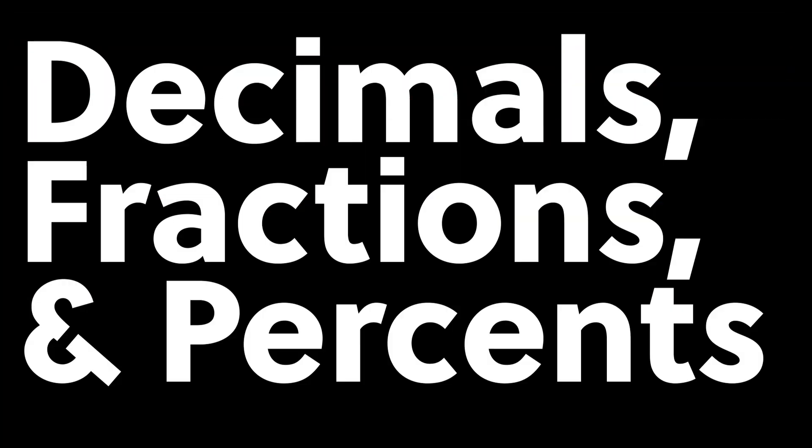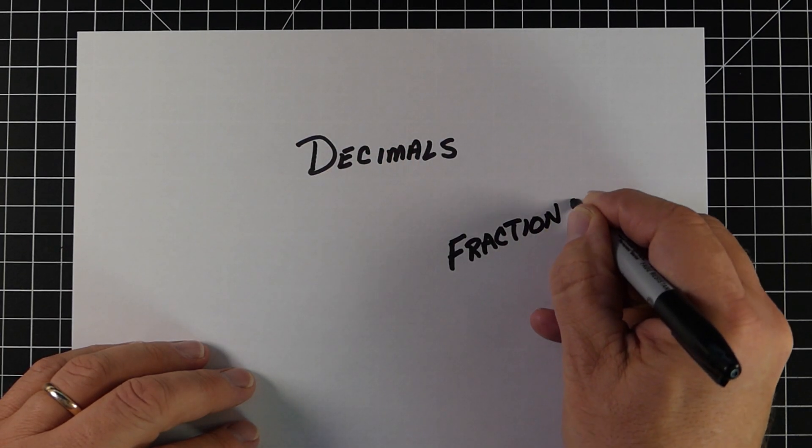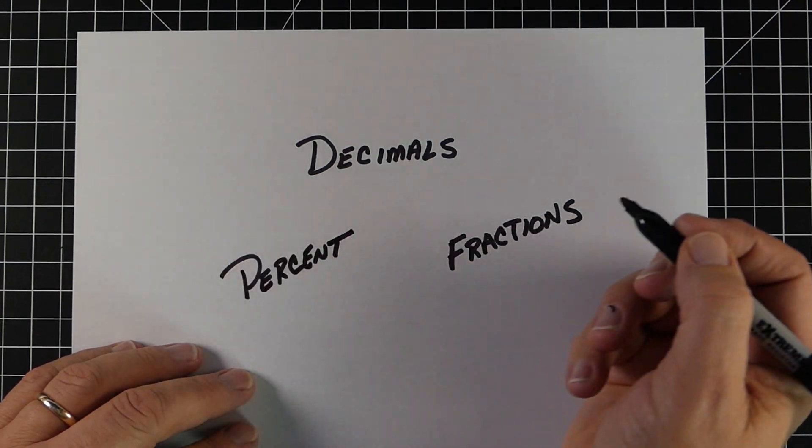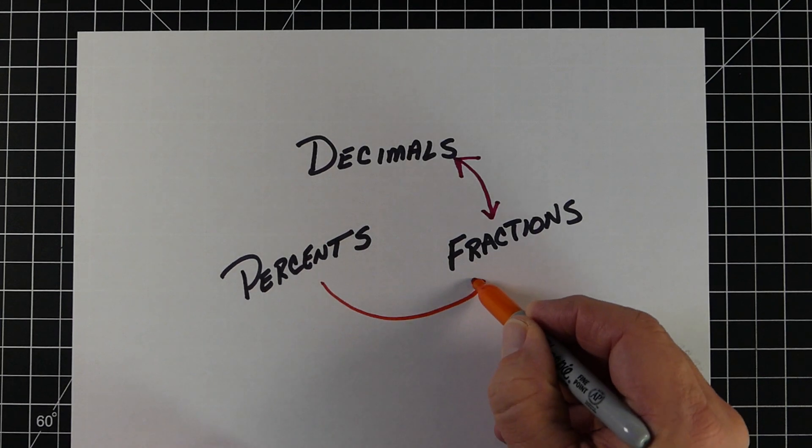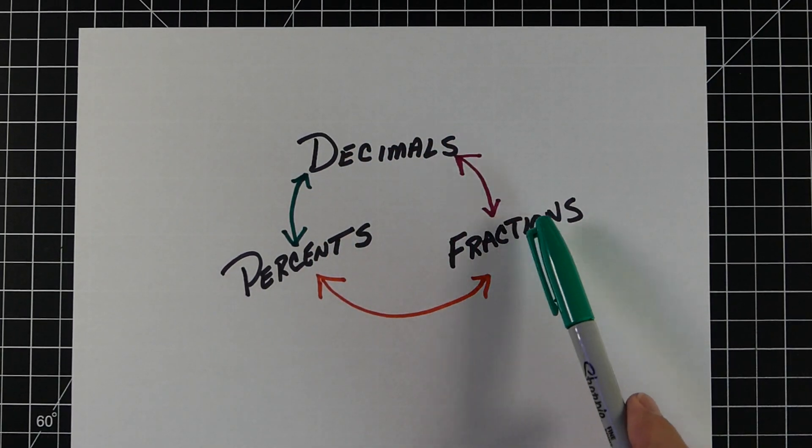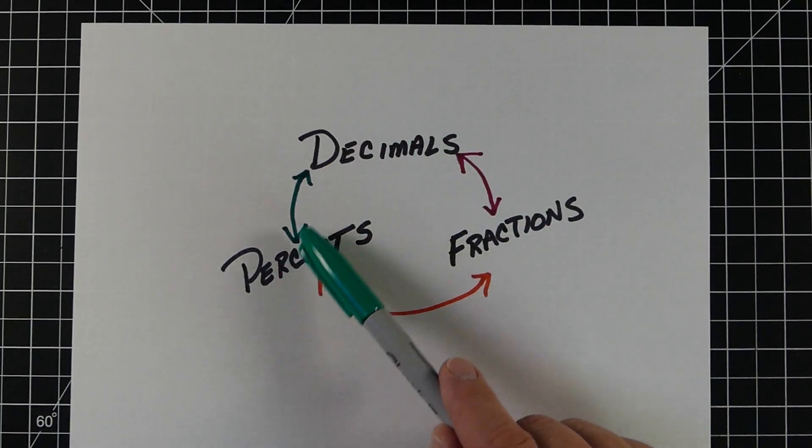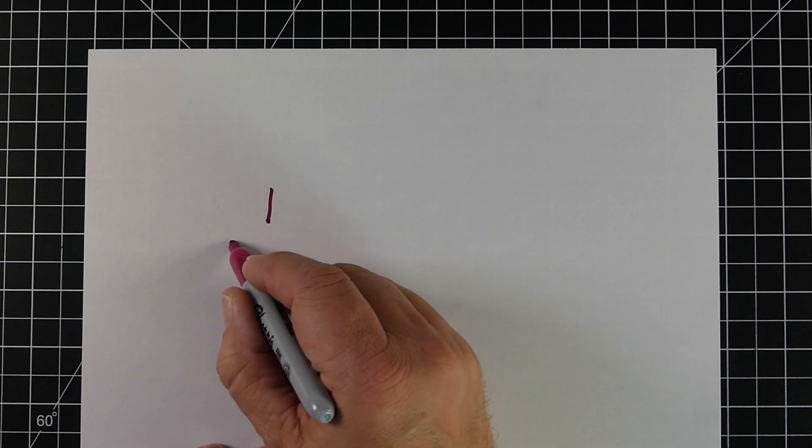In this video, we're focusing on decimals, fractions, and percentages, and the relationship they have with each other. These three are all connected together. One of the key things is our ability to be able to convert each of these into one of the others - for example, making a decimal a fraction or a fraction a decimal, fractions a percent or percent a fraction.